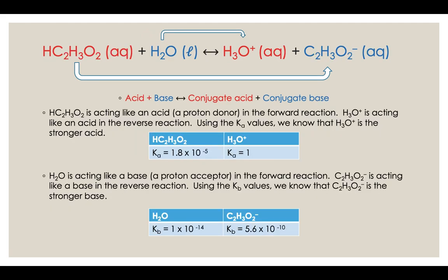Let's look at another example. We just did hydrochloric acid plus water; now let's do acetic acid plus water. What happens when you have a weaker acid plus water? The acetic acid is still acting like an acid — a proton donor in the forward reaction — turning into the acetate ion. The acetate ion is the conjugate base of our weak acid, because it differs by only a proton from acetic acid itself.